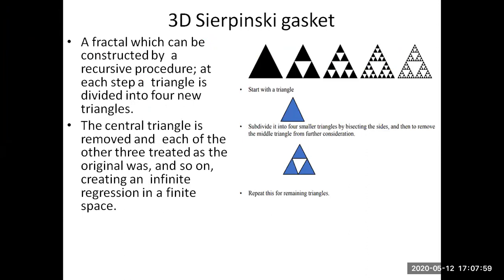First, we will understand what a gasket is. A gasket is a fractal which can be constructed by a recursive procedure. At every step, a triangle will be divided into 4 new triangles. We subdivide the triangle into 4 smaller triangles by bisecting the sides, then remove the middle triangle from further consideration. Each of the other 3 triangles is again considered as the original one, and we continue this recursively until the number of divisions specified.